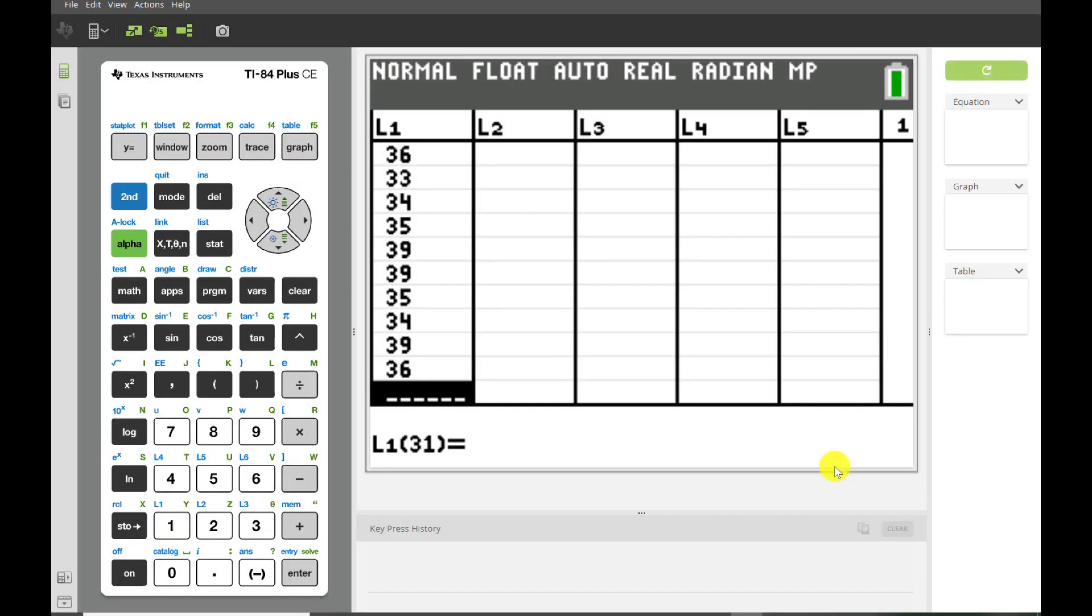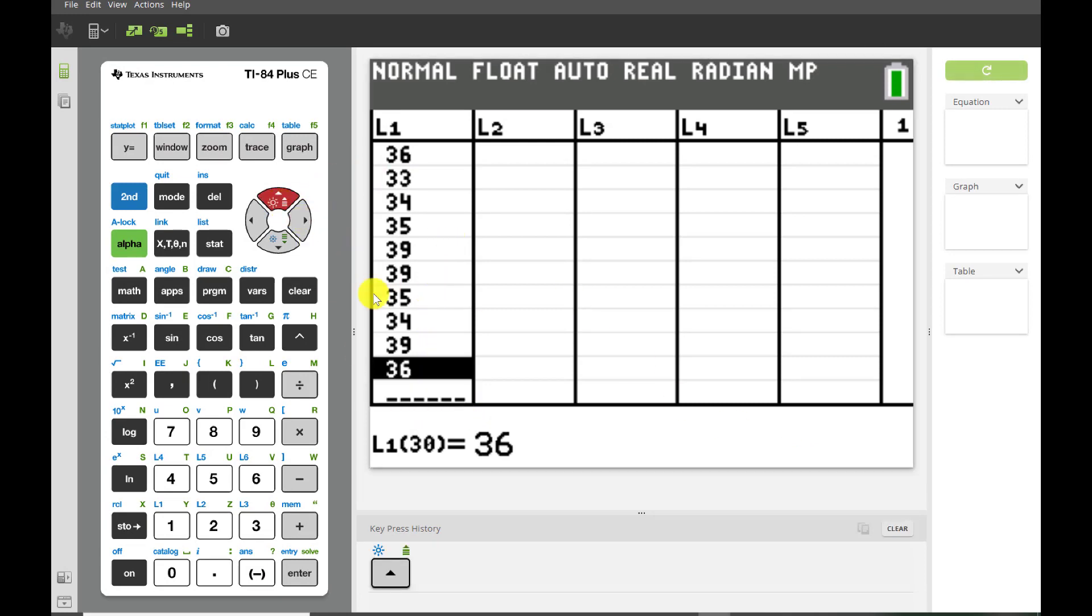Alright, so I've got all my data entered in my calculator in list one. Make sure you do the same. And you can see if I scroll up. Yep, that last value 36. That's my 30th data value. Now I haven't sorted the data because I'm going to use my calculator function to make a histogram. So don't worry about the sorting. But if you're doing it by hand, that might have been handy to do.